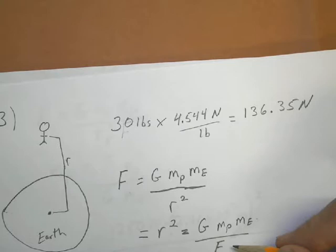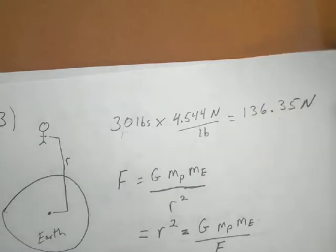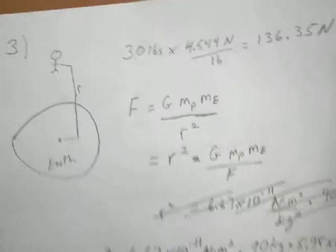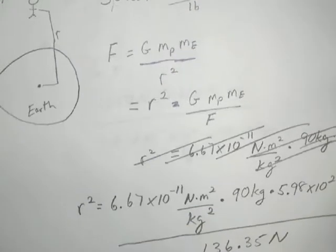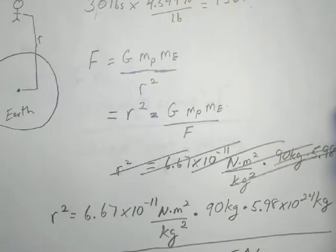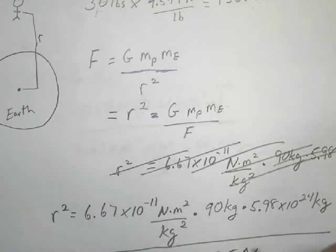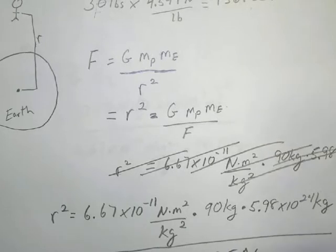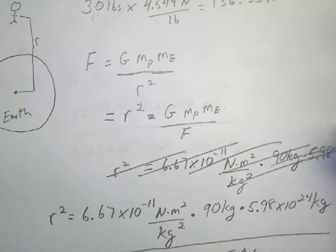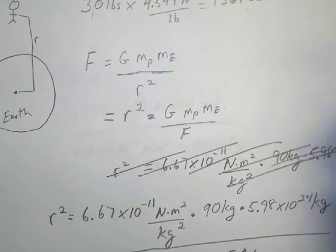Now as you can see here, I started setting it up and ran out of space, so I crossed that out. So just begin in the values. The radius squared is the value of G times the mass of Pete, which is 90 kilograms, times the mass of the earth, which is this number, 5.98 times 10 to the 24th kilograms, divided by the force between them, which is 136.35 Newtons.